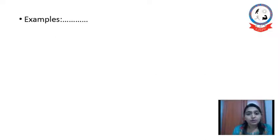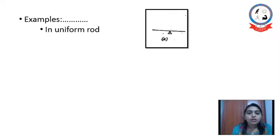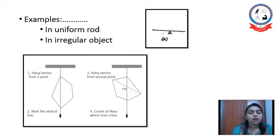Here are some of the examples. For a uniform rod, the center of gravity can be the middle point of that rod. If we want to balance that rod at this point, the balance of the rod can be balanced at this point. That's why the center of gravity of this rod can be predicted over here. But what if any irregular object is there? Like a cardboard.